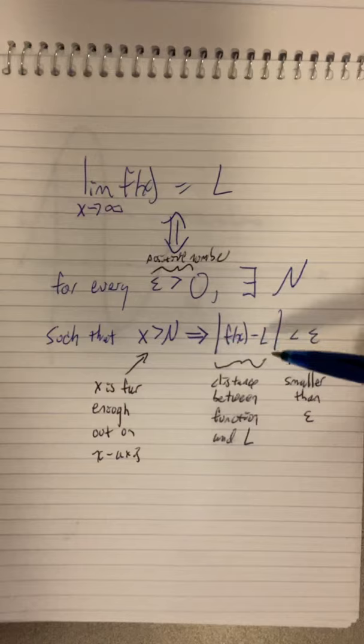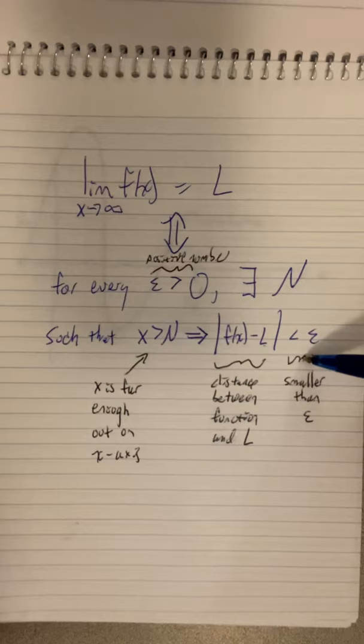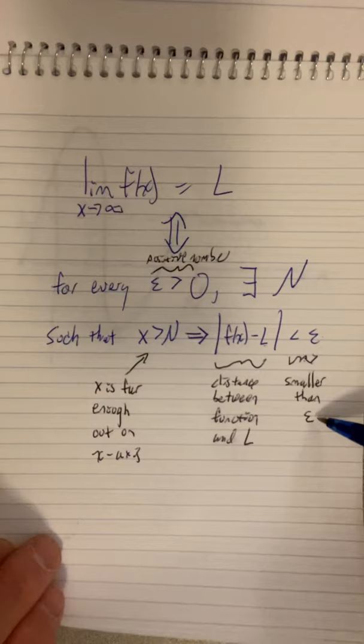such that when x is greater than N, so when we're far enough out on the x-axis, it's guaranteed that the distance between the function and the limit, L, the function and the number L, that distance between them, is smaller than epsilon. Well, epsilon was that positive number.